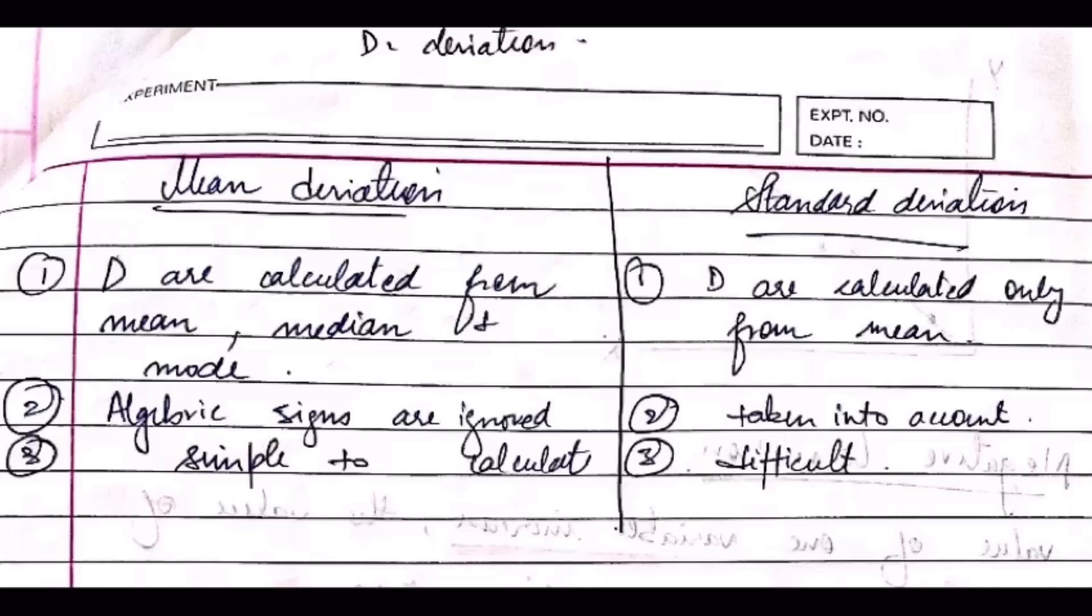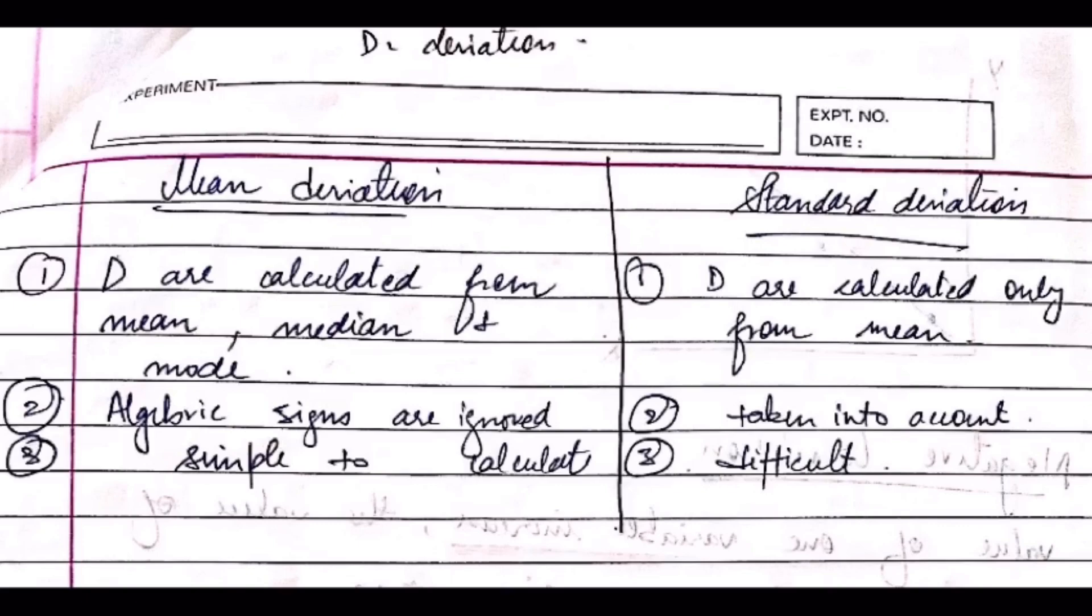Now what does mean and standard deviation mean? I will discuss this in the next video in detail, but for the time being just you can go through these terms. Mean is calculated from mean, median, and mode. It is basically the average computed of the given data, and standard deviation is calculated only from mean.